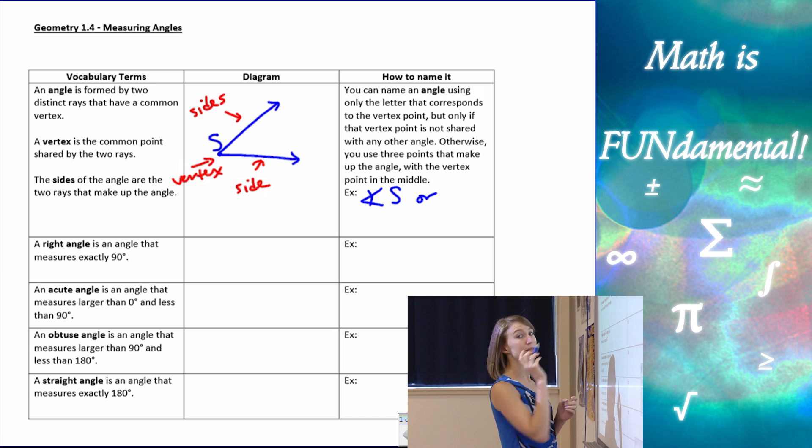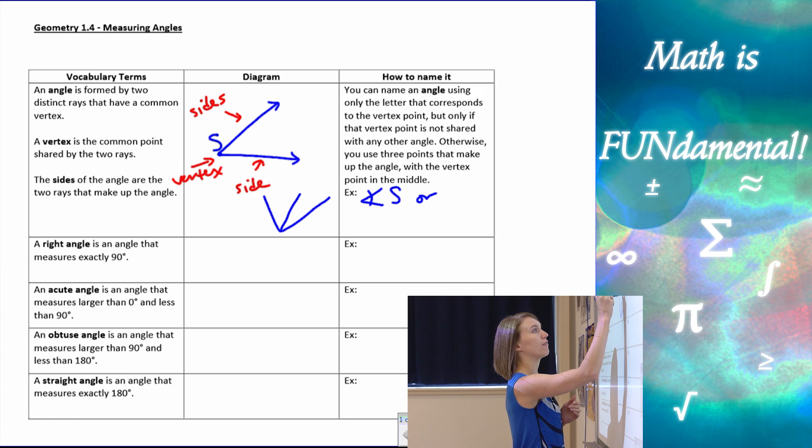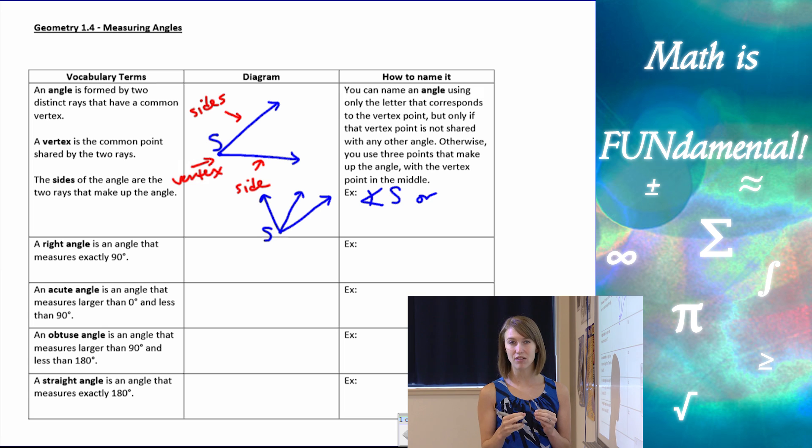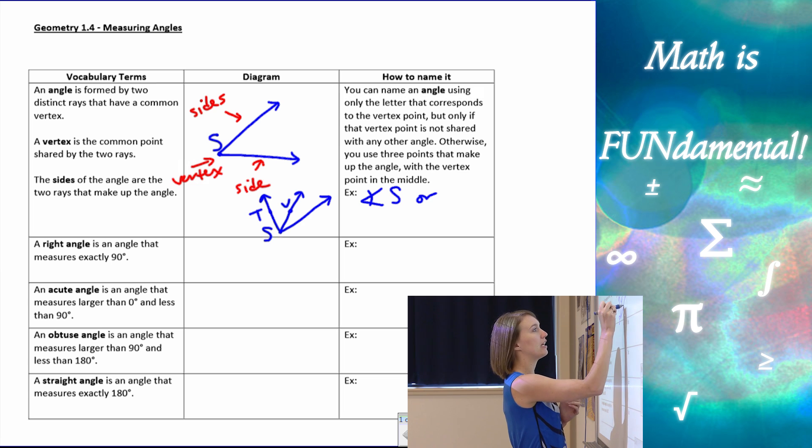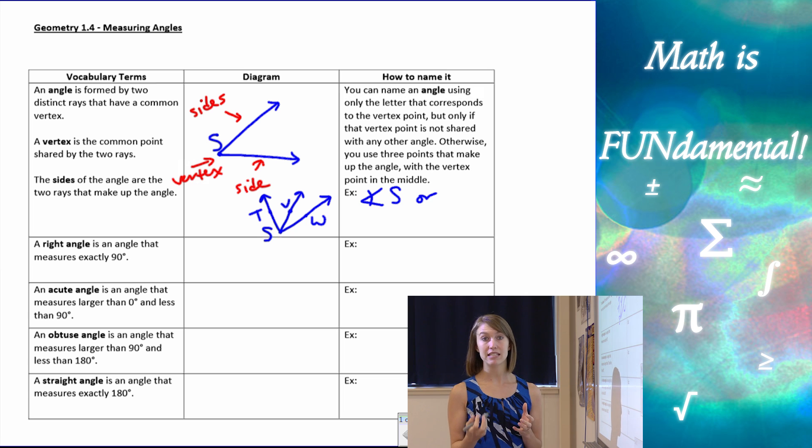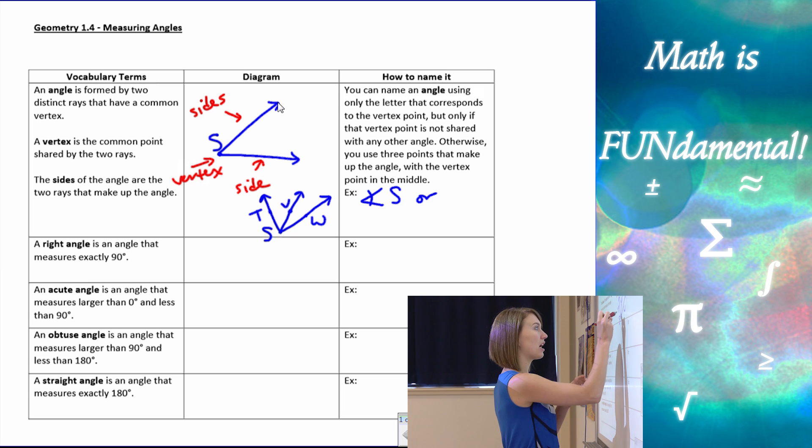Another way to name the angle, especially if we have more than one angle at the same vertex. For example, if I have more than two rays like this and I have an S for my vertex, I can't simply name that angle angle S because I don't know which angle I'm looking at exactly. There's two different angles here. So we're going to need to use a couple other points. We can put a T here, a V, and a W.